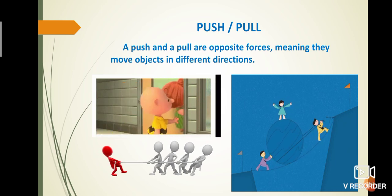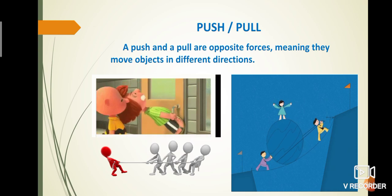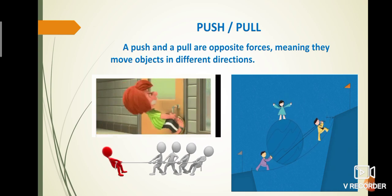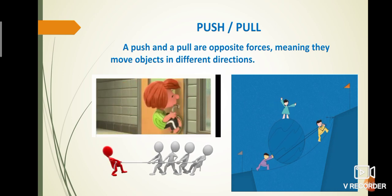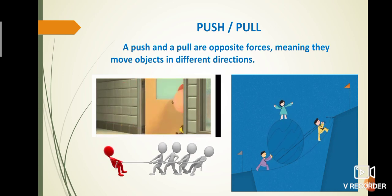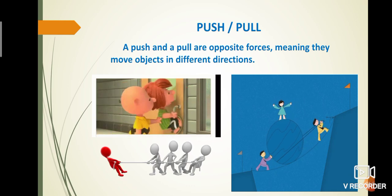In the second picture shows a game of tug of war. People pull the rope to opposite sides. So, the direction changes. In the third picture, one person pushes a heavy weight and another person pulls that.